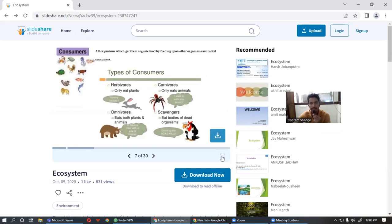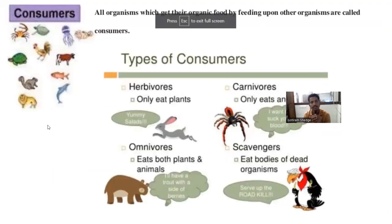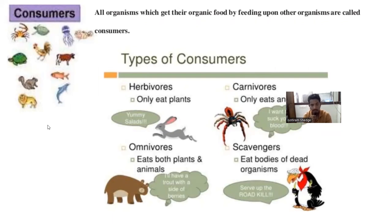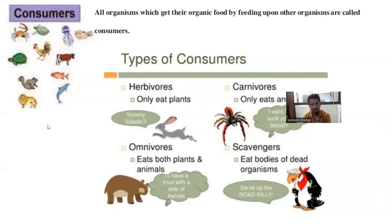Now we study about consumers. The organisms that get their organic food by feeding upon other organisms — those organisms dependent on another organism for feeding — are called consumers. There are various types of consumers: herbivores, also known as primary consumers; carnivores, the secondary consumers; and omnivores.